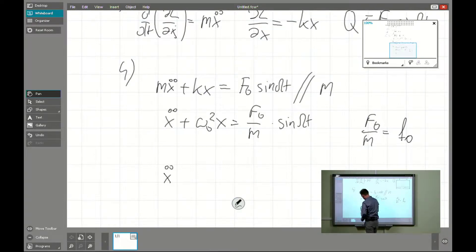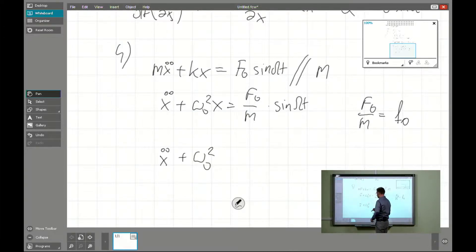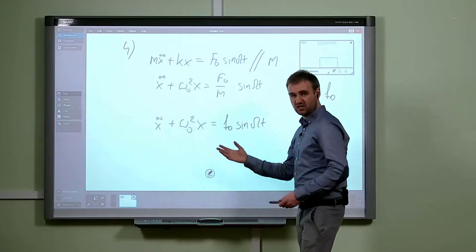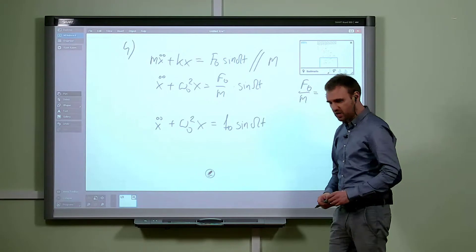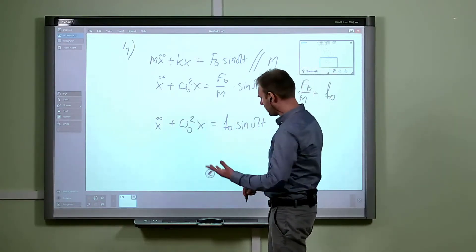It means we have the acceleration of the system plus omega zero squared times x equals the excitation in the form of acceleration. This is the governing equation of our undamped excited system.